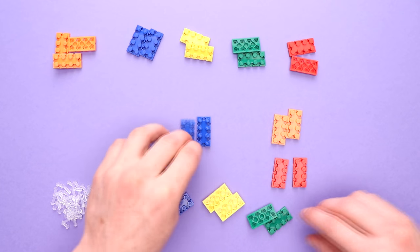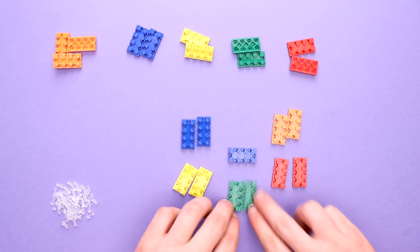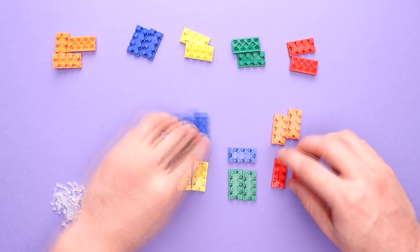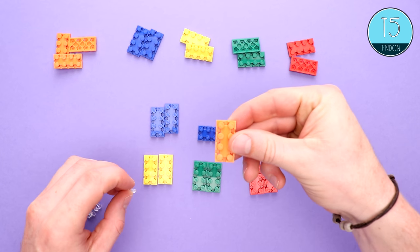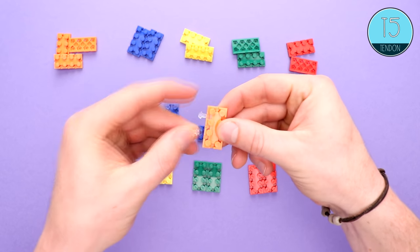When I started to build I laid out all the pieces, what that helped me do was picture what it is I was actually going to build. Guys, remember to use the token up in the top right hand corner, that's going to let you know which tendons we're using as we build along together.